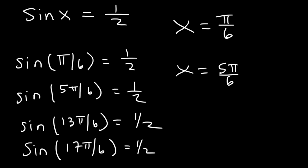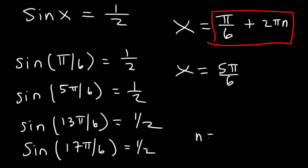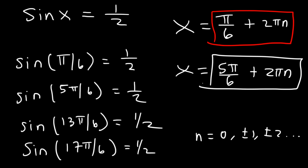To write an equation that gives all solutions: x = π/6 + 2πn, or x = 5π/6 + 2πn. The period of sine and cosine is 2π, where n is any integer — n could be 0, ±1, ±2, and so forth. So these are the two general answers. Anytime you need to find all solutions, make sure you write your answer in terms of n.